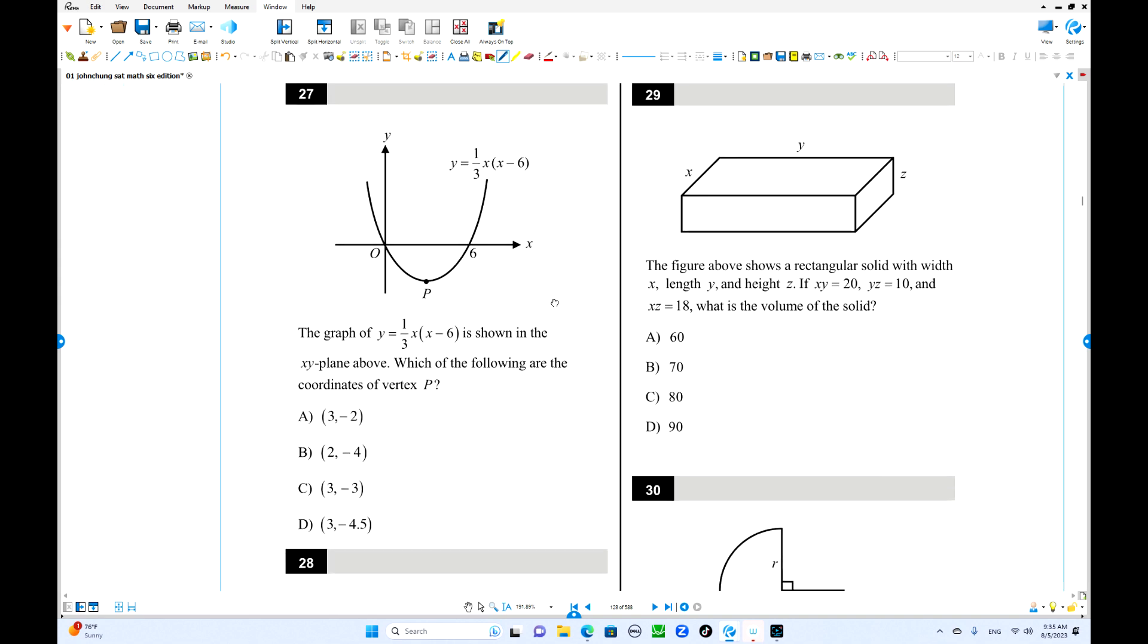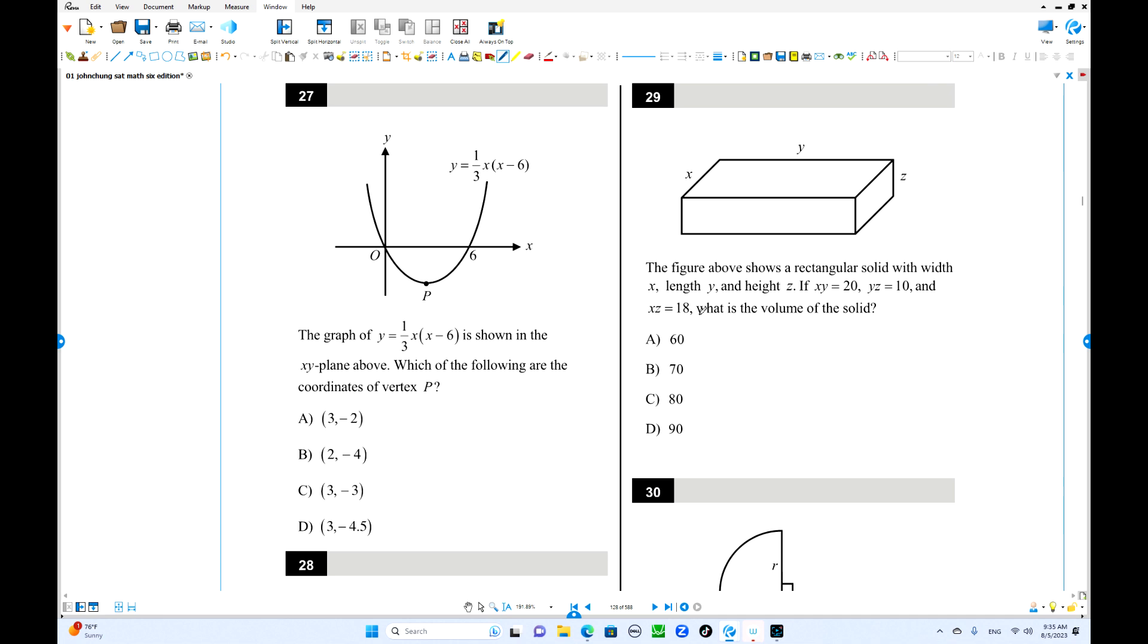Number 27. We have a quadratic. Where is the vertex coordinate? This is the vertex, this point. This point is always the same distance to the x-intercepts because this is symmetry. The axis of symmetry is in the middle. But this point is 3. Where is the y-coordinate? Put the number 3 in the equation. Y equals one third times 3 times 3 minus 6. 3 minus 6 is negative 1.